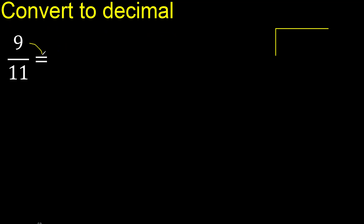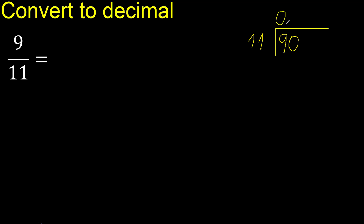9 divided by 11. Since 9 is less than 11, we cannot divide directly. Therefore, complete with 0 — always complete with 0 here, with 0 point.